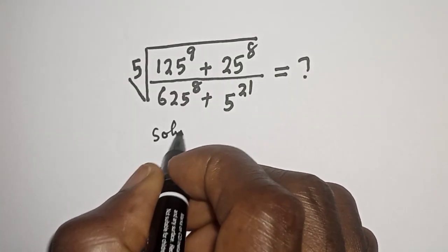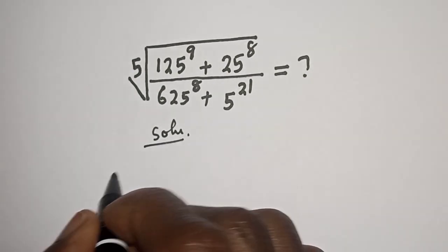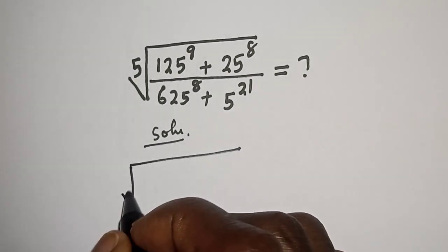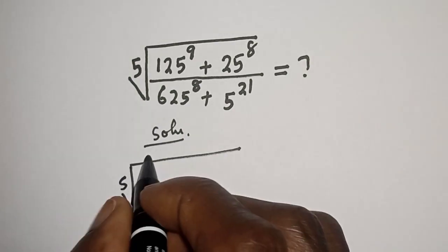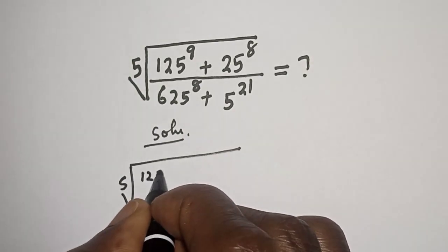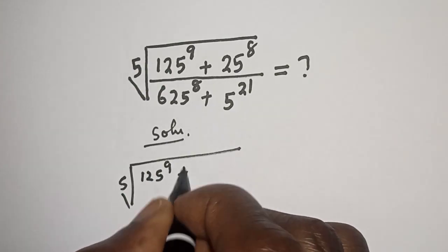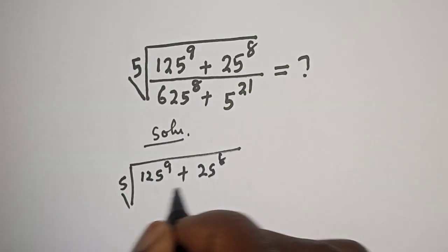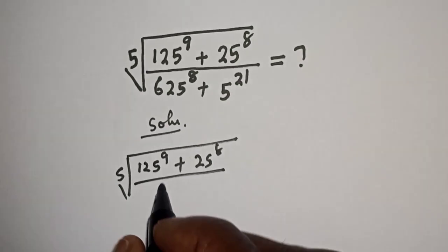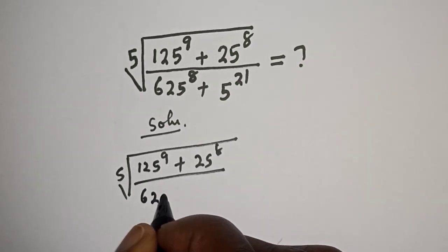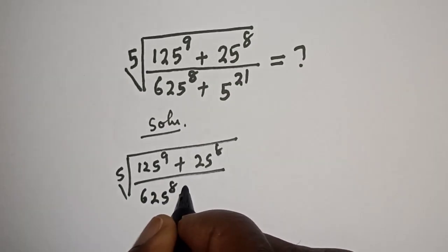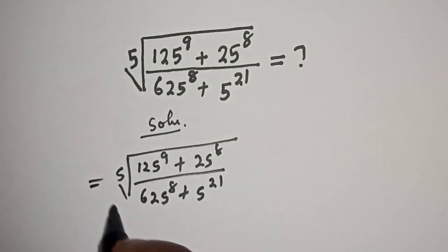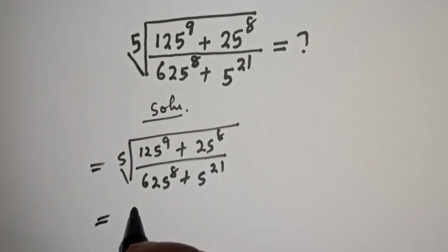Solution. We have the 5th root of 125 raised to power 9 plus 25 raised to power 8, over 625 raised to power 8 plus 5 raised to power 21. This is equal to...